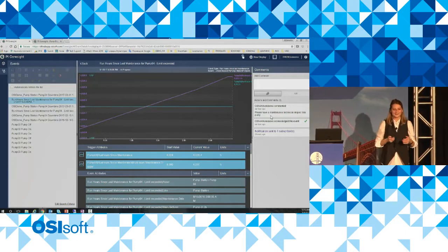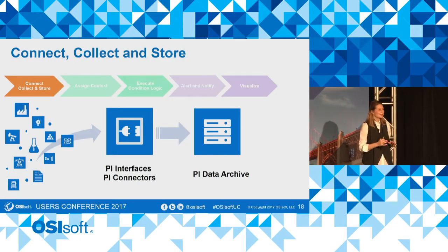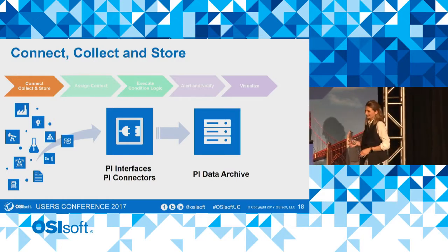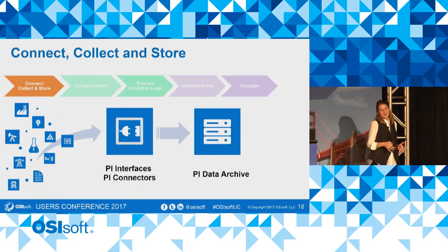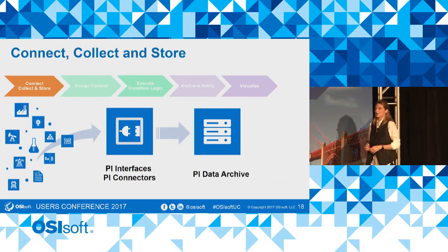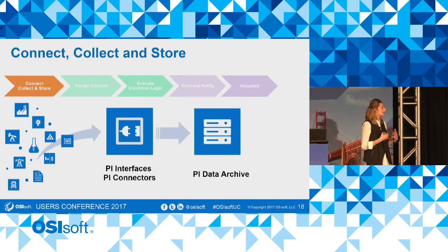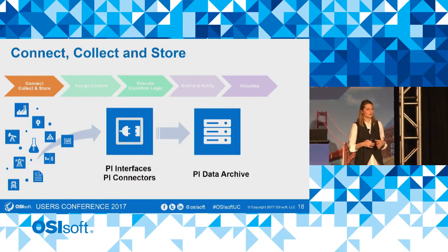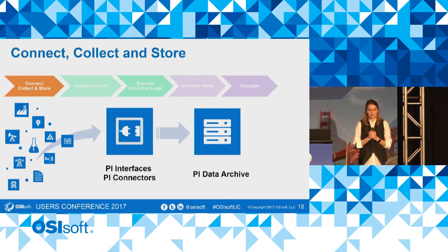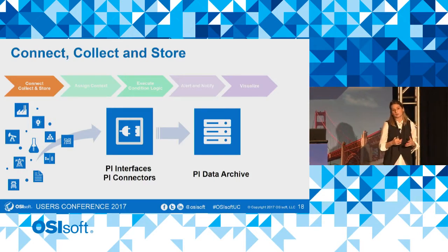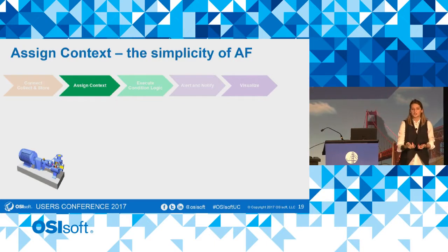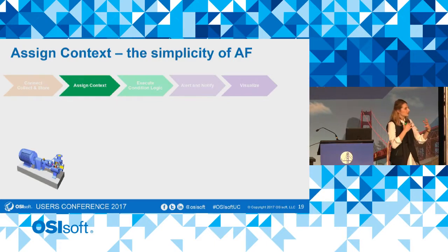Now we're moving to the data collection step. I really want to tell you how to configure an OPC interface, set up DCOM security, create PI tags — no, no, that's too much. We have multiple options here and we can collect data from various data sources using our PI interfaces and PI connectors. We can store data in our PI Data Archive in a very efficient and secure manner. You can check our YouTube learning channel — we have a lot of videos there to help you set up everything. Of significant importance here is to make sure you are collecting all the data you need for your CBM — your condition-based maintenance. So we assume we are collecting all data for our pump, such as bearing temperature and flow rates, and it's time to start using this data.